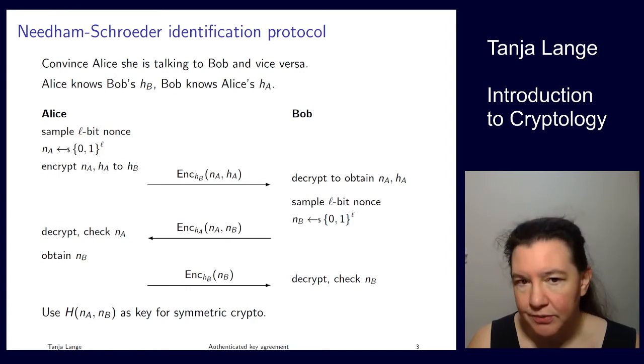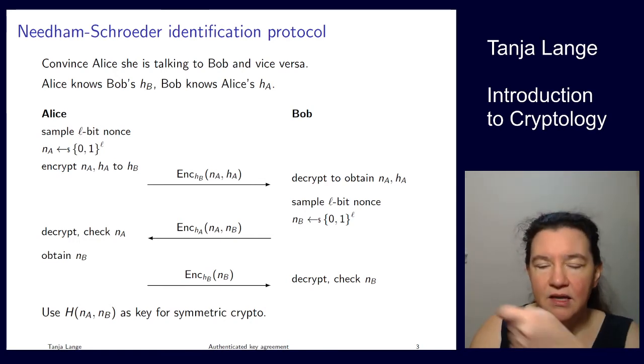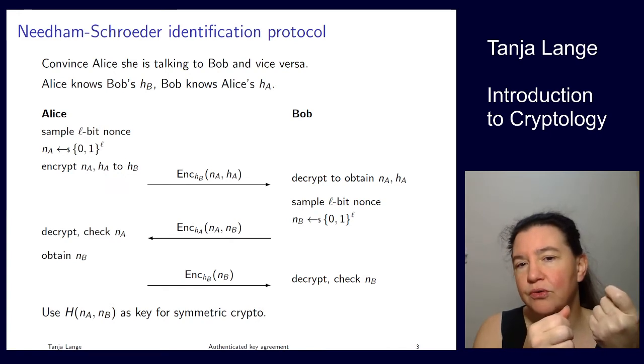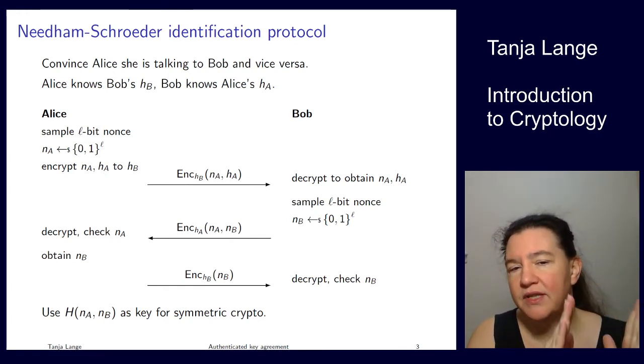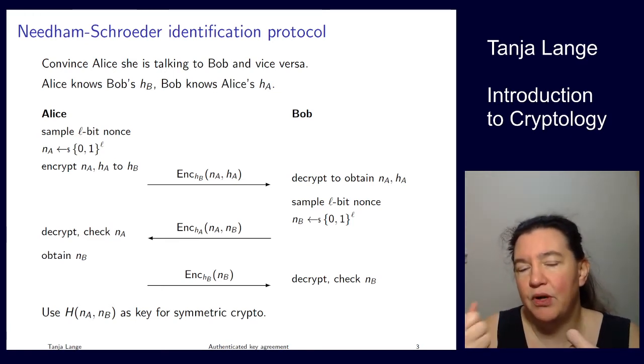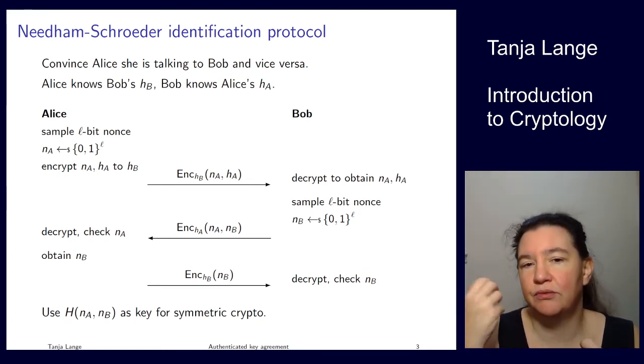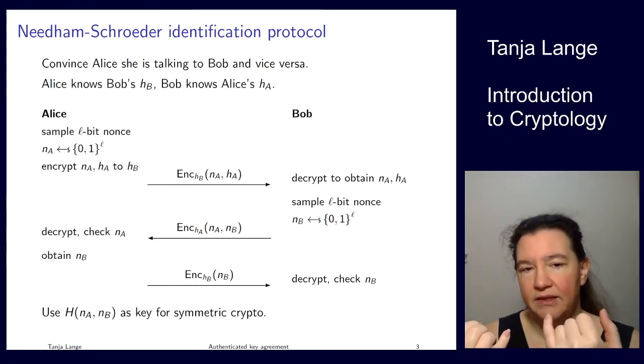Now Bob decrypts. He knows the secret key for H_B, obtains the nonce and Alice's public key, and then does a matching site. So Bob also picks an L bit string and will send this to Alice. It's kind of important that these messages belong together. So he proves to Alice that yes, he was able to recover the N_A, and here's the challenge for Alice the N_B.